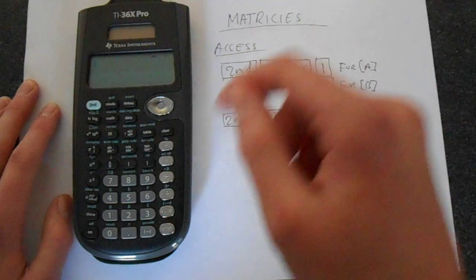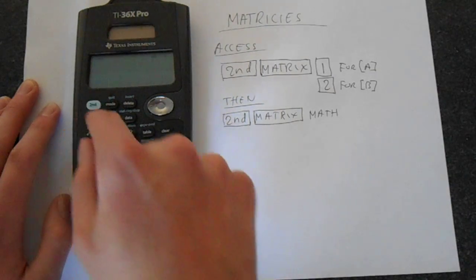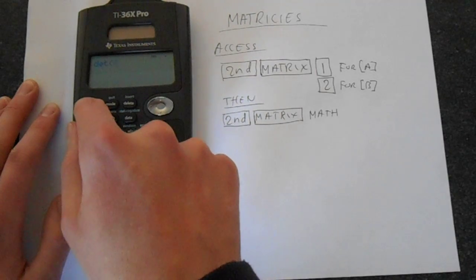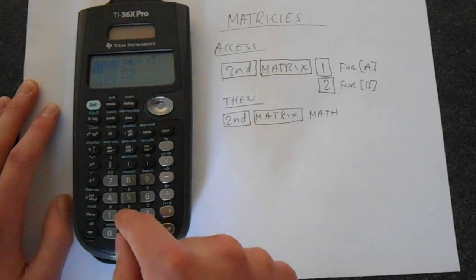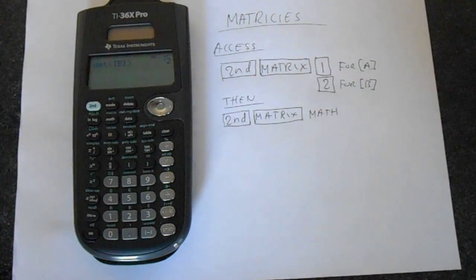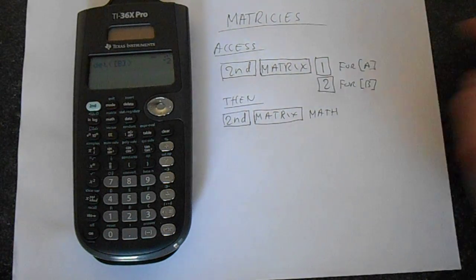Let's perhaps find the determinant of matrix B. So if we go second function matrix, go to math, 1 gets us the determinant, then second function matrix 2 gets us matrix B and there's the determinant of matrix 2 or rather matrix B.